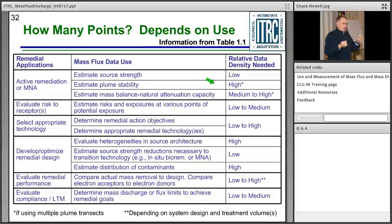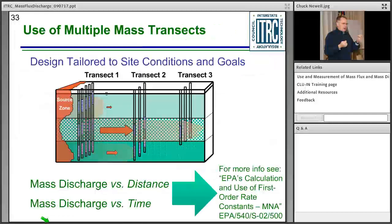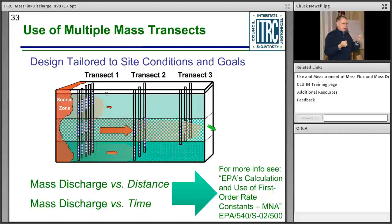Using multiple transects at a site is a great approach. You can see how a plume breaks into fewer contaminated zones as you move downgradient. Multiple mass transects allow calculation of first-order rate constants. As EPA researcher John Wilson noted, using mass discharge data is a great way to understand attenuation — plotting mass discharge versus distance shows how quickly the dissolved plume attenuates moving away from the source. Looking at one transect over time shows how quickly the source is weathering. An EPA document describes these different flavors of first-order rate constants.